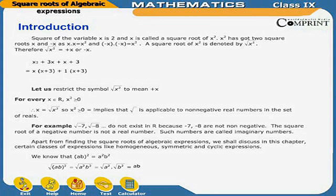We restrict the symbol √(x²) to mean plus x. For every x belonging to R, x squared is greater than or equal to zero, therefore x equals √(x²). This implies that the square root is applicable only to non-negative real numbers. For example, √(−7) and √(−8) do not exist in R because −7 and −8 are not non-negative. The square root of a negative number is not a real number.